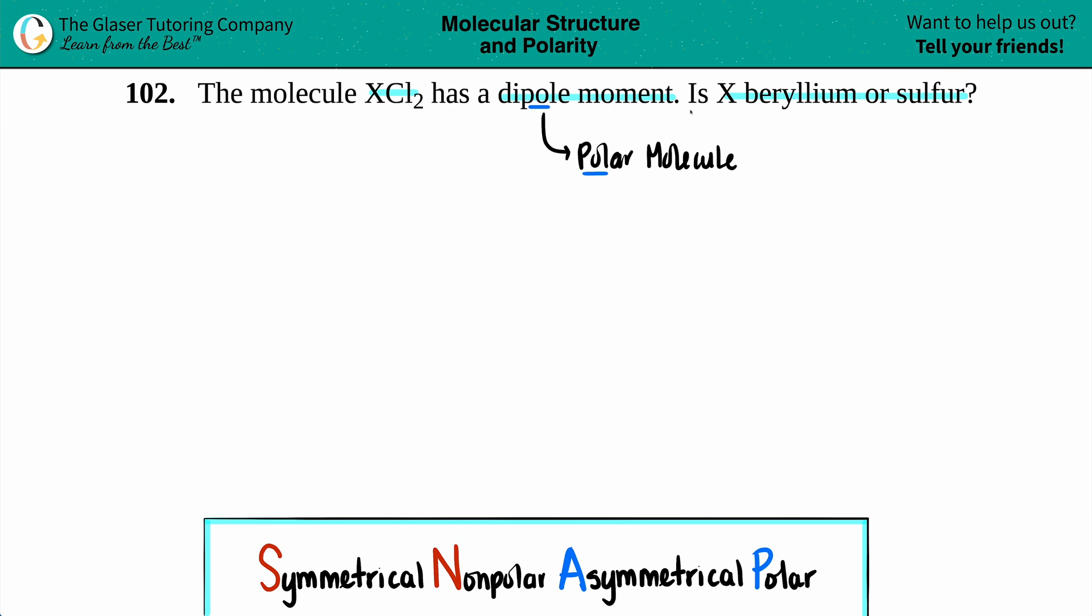They give us two options: the X element is either beryllium, which is Be on the periodic table, or sulfur, which is S. Now, in order to find out dipole moment, bond polarity, molecular polarity, hybridization, molecular geometry, the easiest way to go about these problems is to just take a few seconds and draw the Lewis structure. Even though it's an extra step, you get to see it visually right in front of you. Usually when they ask you these questions, it's all reliant on Lewis structure.